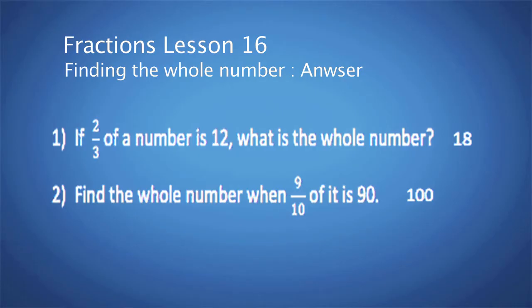Question 1: If two-thirds of a number is 12, what is the whole number? The answer is 18. Question 2: Find the whole number when nine-tenths of it is 90. The whole number is 100, because nine-tenths of 100 is 90.